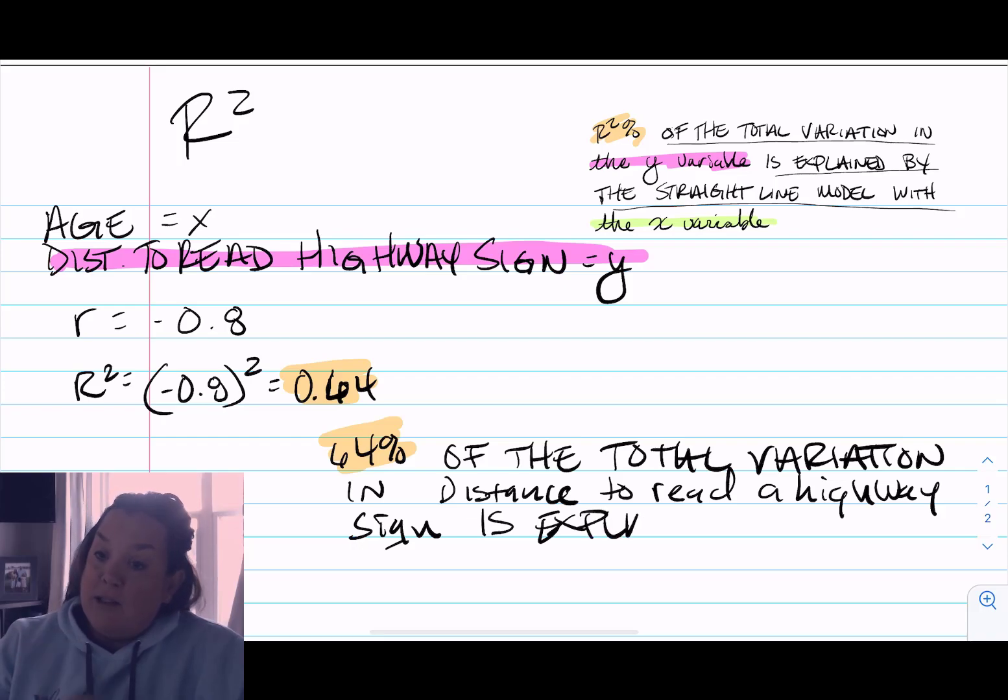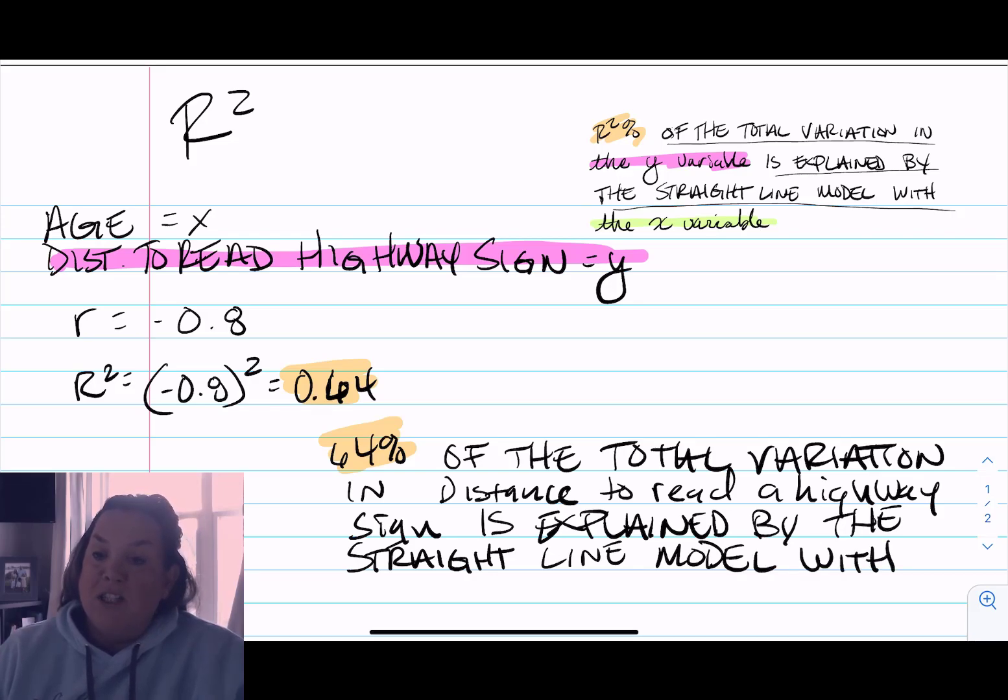...again, all caps - those are always the words you use. We're just changing the y variable, x variable, and what the R² percent is. So we end with age: 64% of the total variation in distance to read a highway sign is explained by the straight line model with age.